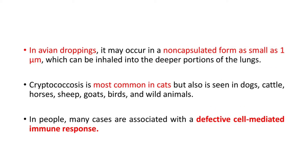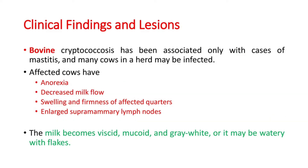In avian droppings, it may occur in a non-capsulated form as small as one micrometer, which can be inhaled into the deeper portions of the lungs. Cryptococcus is most common in cats but also seen in dogs, cattle, horses, sheep, goats, birds, and wild animals. In people, many cases are associated with a defective cell-mediated immune response.